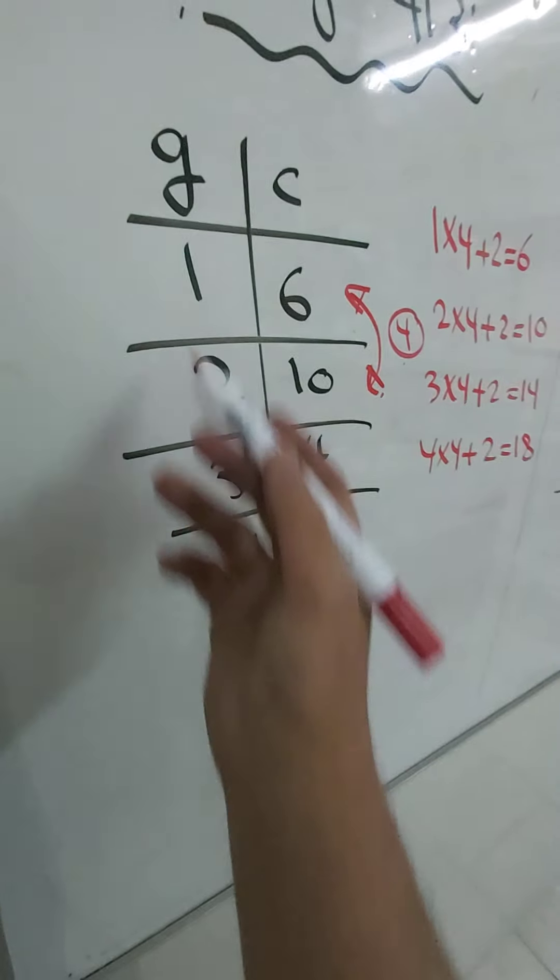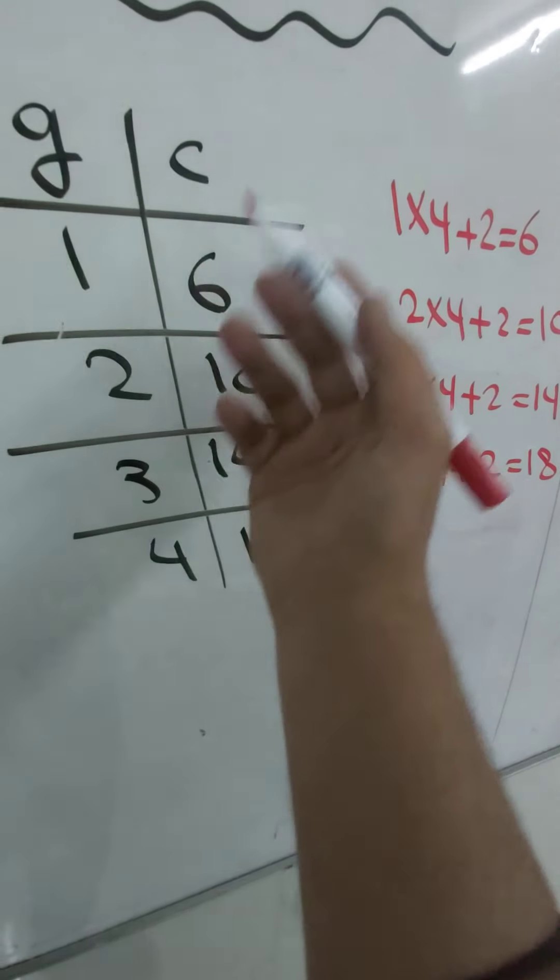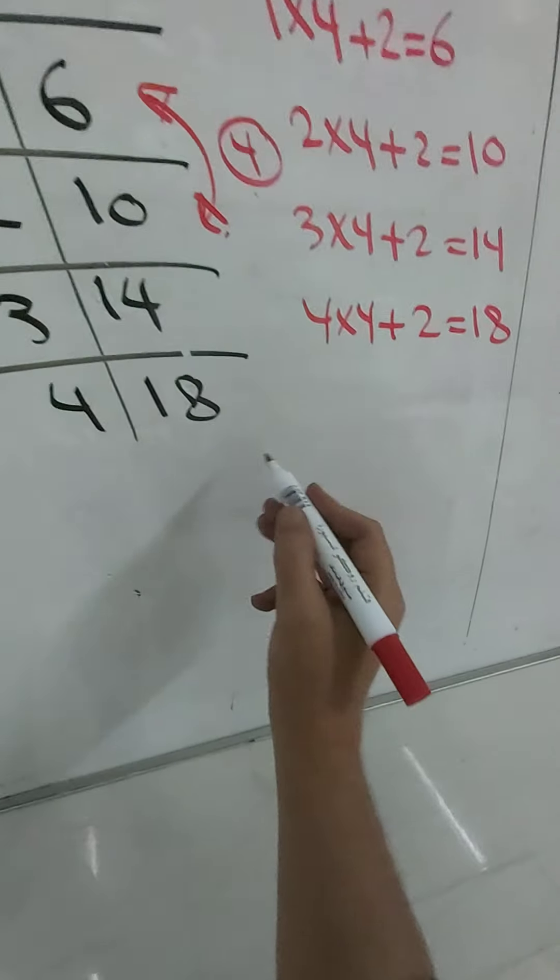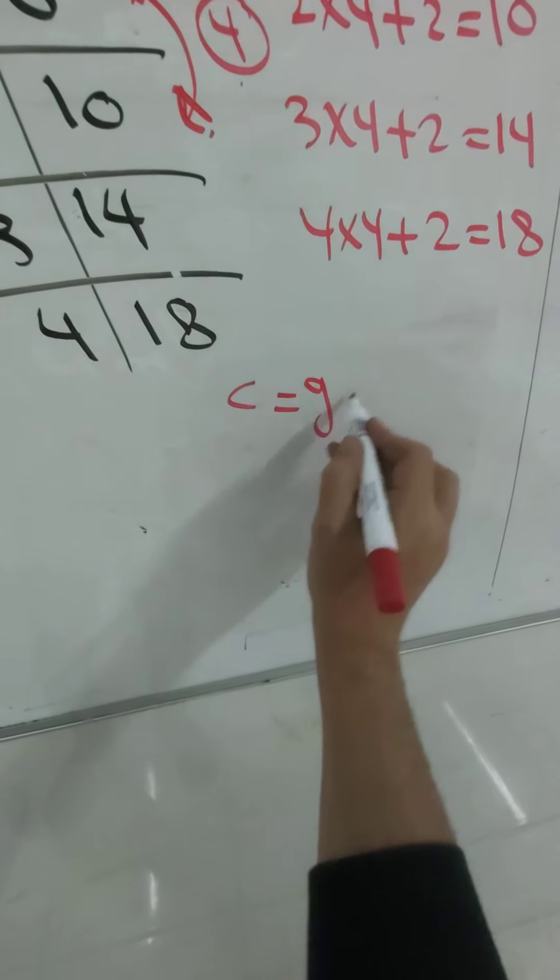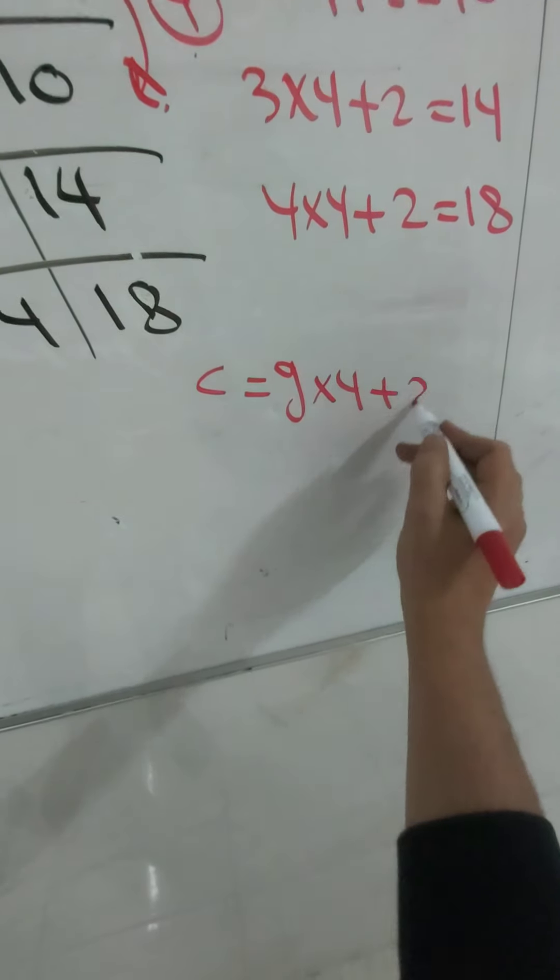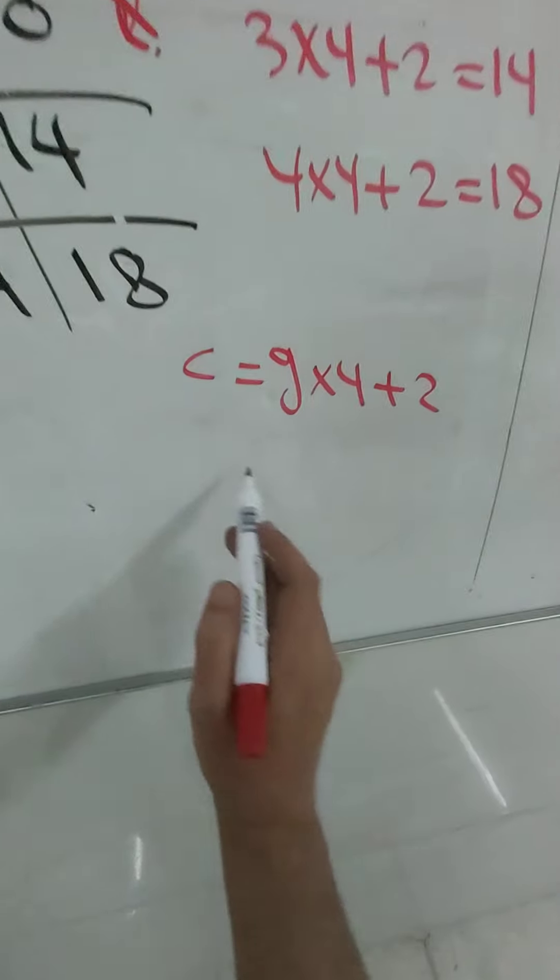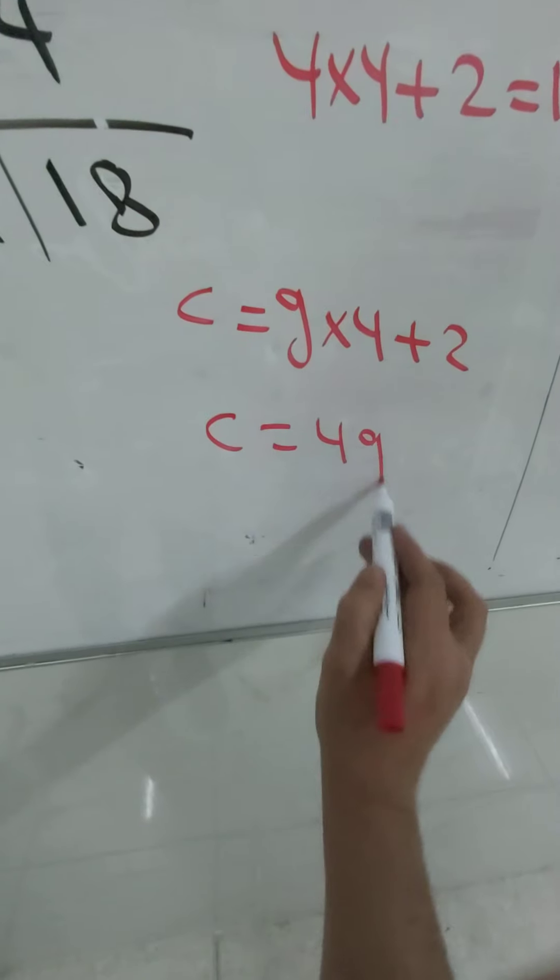Now let's prepare the equation. Here I multiply the value of g by four, then add two to get c. So c should be g multiply four plus two, and we can write it as c equals four g plus two.